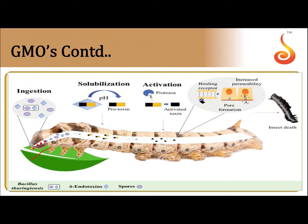When a Bt plant is eaten by an insect, the protoxin passes through their digestive system and reaches the small intestine. Because of the high alkaline pH, the protoxin is converted into an active toxin. The activated toxin binds to the surface of midgut epithelial cells, creating pores, which cause swelling and lysis, leading to the death of the insect.